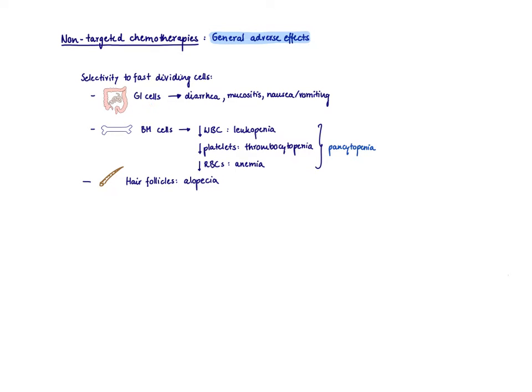Number one are GI cells. So therefore, you would expect to get mucositis, itis for inflammation. So inflammation of your mucosa, you get diarrhea, also nausea, vomiting. Remember, whenever you're going to damage your mucosa, the enteric nervous system is going to pick that up, it's going to report it to the area postrema where nausea and vomiting is controlled.